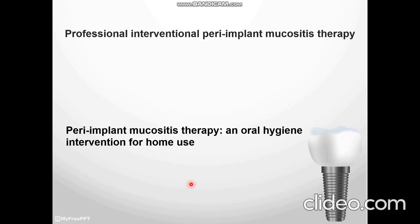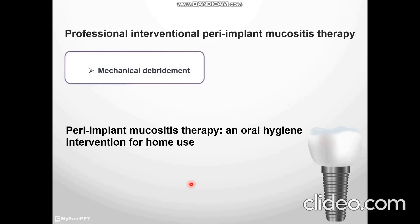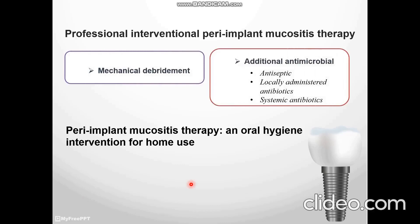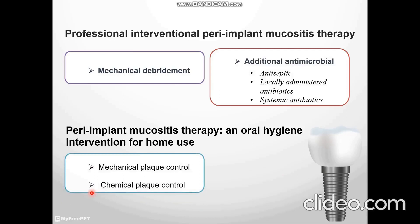Several therapies for peri-implant mucositis include professional interventional therapy: mechanical debridement, and additional antimicrobial agents such as antiseptics, locally administered antibiotics, and systemic antibiotics. The second category covers peri-implant mucositis therapy and oral hygiene interventions for home use, including mechanical plaque control and chemical plaque control.